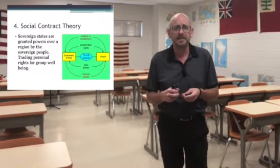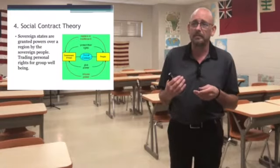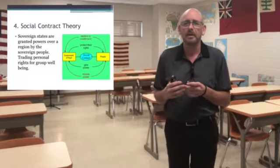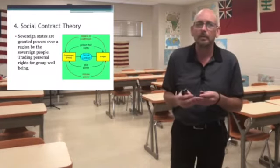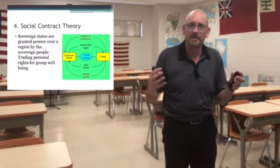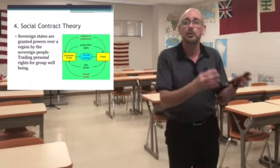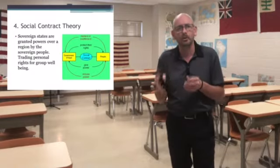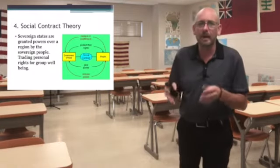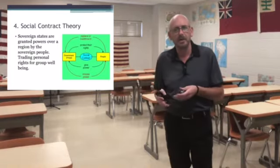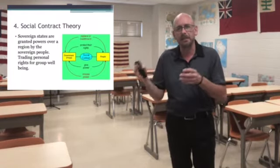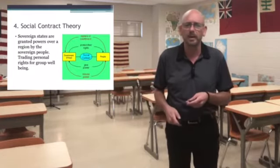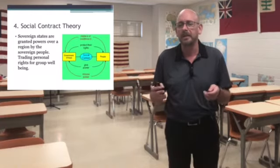The fourth theory is the social contract theory, which is the most popular in the United States and how our government was founded. If you read the Declaration of Independence, it talks about governments being instituted among men — meaning people came together and made a deal to create this government. The idea is that sovereign states are granted power by the people, and the people are ultimately the sovereigns. All power ultimately rests in the people — 'We the People' — and you trade certain personal rights for the well-being of the group.